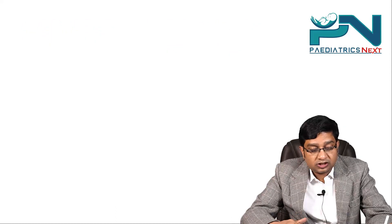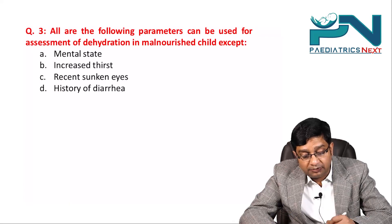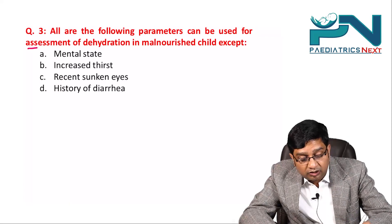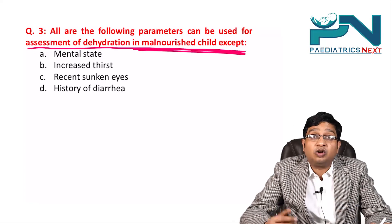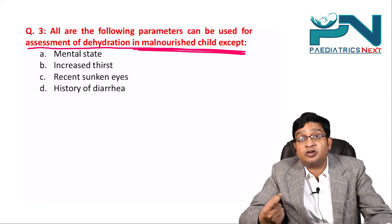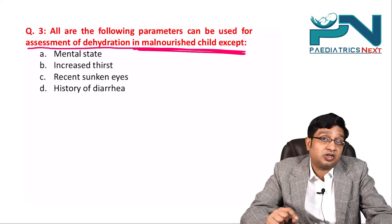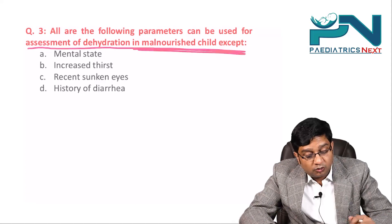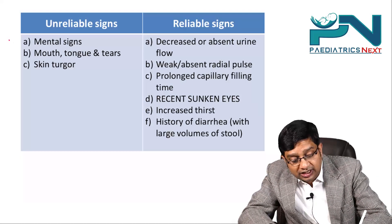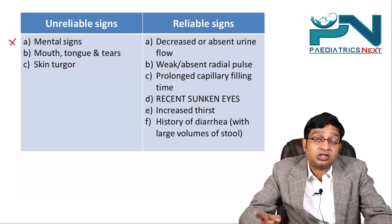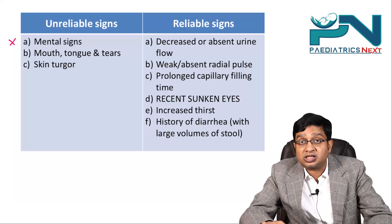Moving on to question three: all of the following are parameters used for assessment of dehydration in a malnourished child except? Normally you look at skin turgor, but skin turgor is not reliable in a malnourished child. Mental state is also unreliable, because in kwashiorkor you already get psychomotor changes.